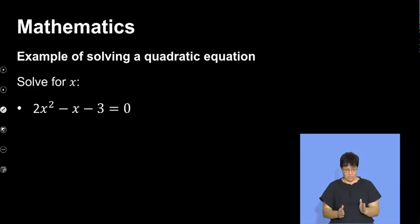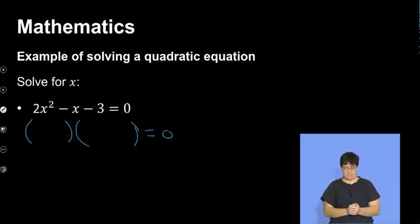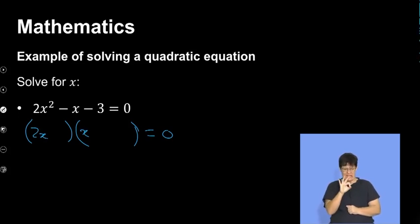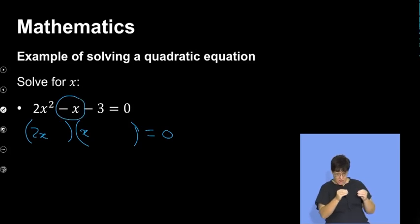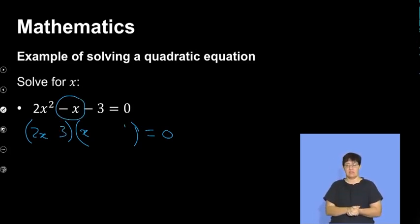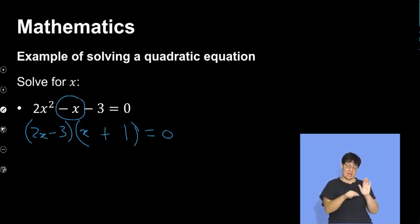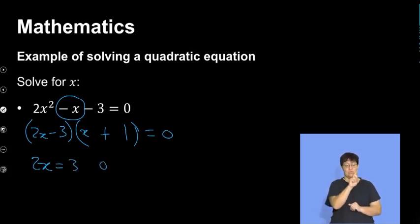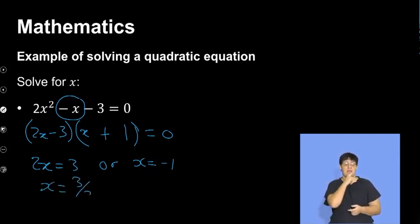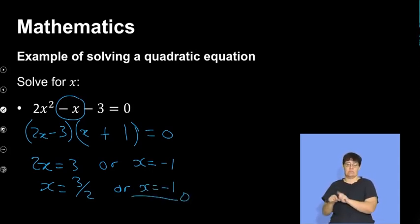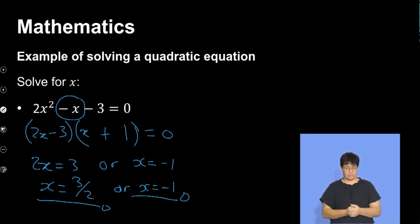Another example where the coefficient of the leading term is not 1 — you still do the very same thing: factorize. It becomes 2x and x. I need to place my 3 strategically so that after FOILing out I get the correct middle term. So 3 goes in one position and 1 in the other. The bigger factor gets the negative because the middle term is negative. It becomes 2x equals 3 or x equals negative 1. So x equals three over two, dividing both sides by 2, or x equals negative 1. Remember to test your solutions after working it out.